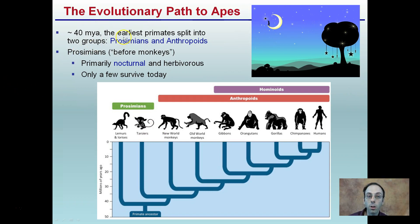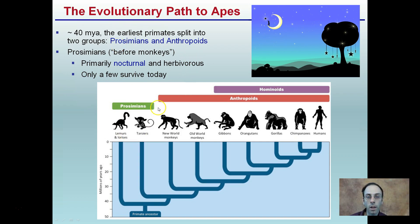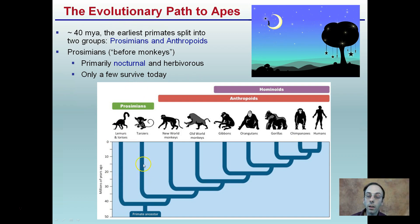About 40 million years ago — MYA stands for million years ago — the earliest primates split into two groups. There's this kind of before-monkeys group that we allocate here. It's a smaller group, probably nocturnal and herbivores.